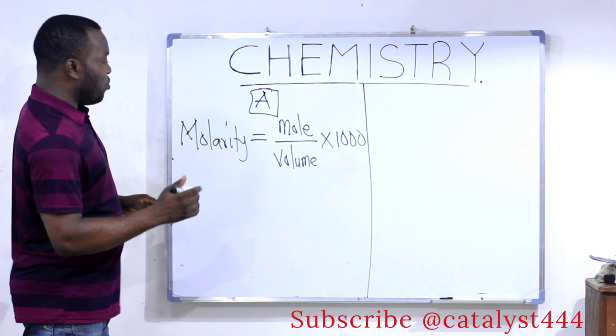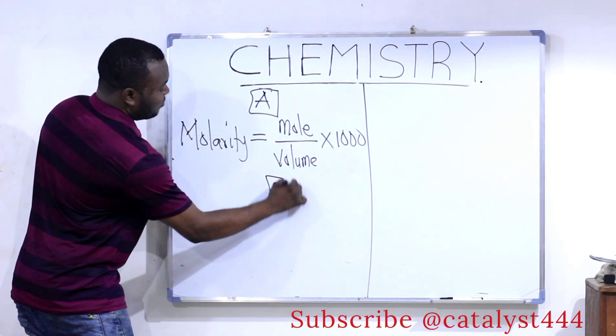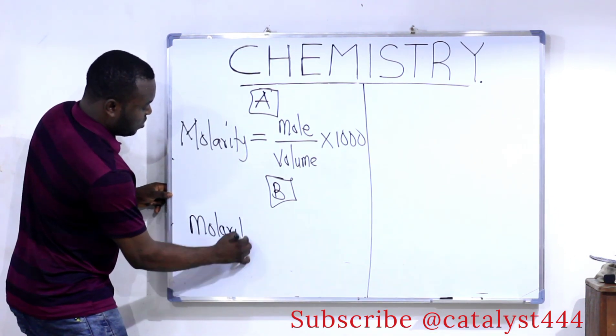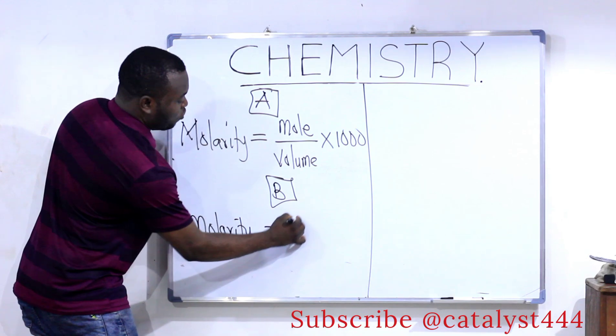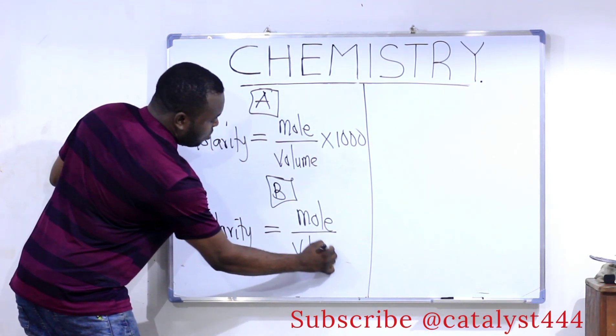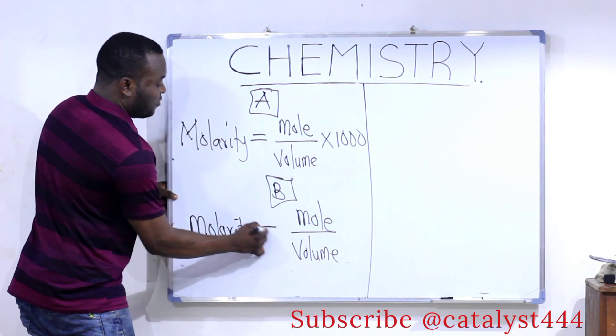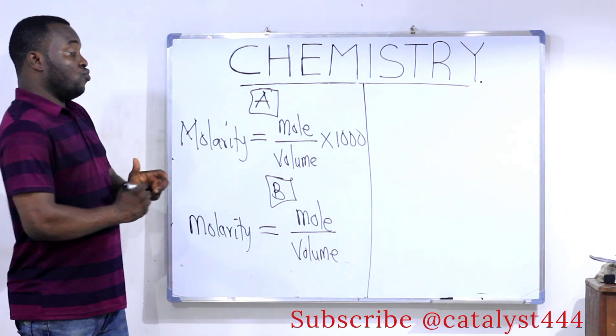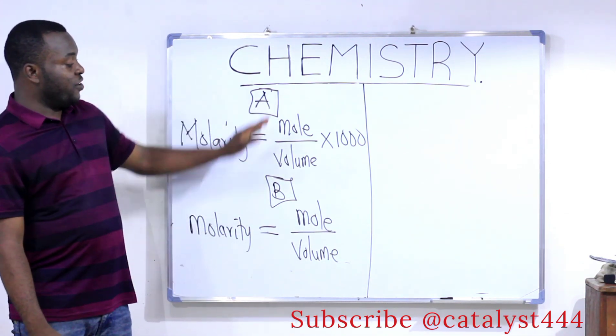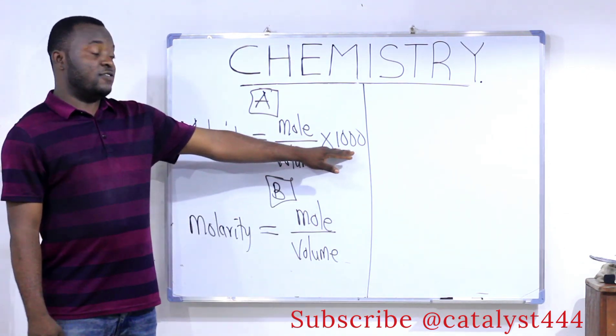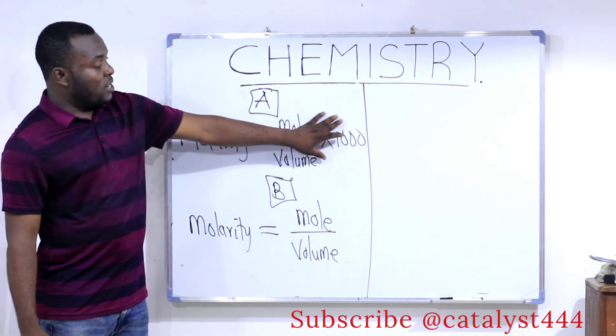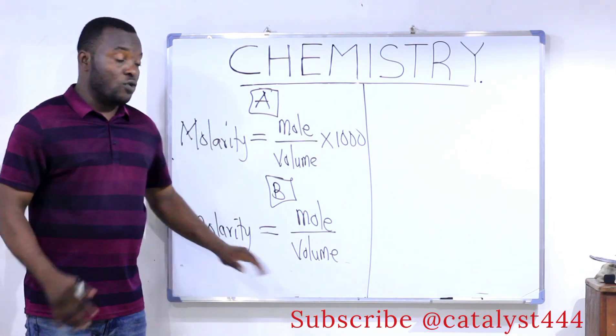While Formula B says that molarity is equal to mole divided by volume. Now you can see that the difference between these two formulas, Formula A and Formula B, the only difference between the two of them is this 1,000 here. Now how do we know when to use the formula that has 1,000 and the one that does not have 1,000?